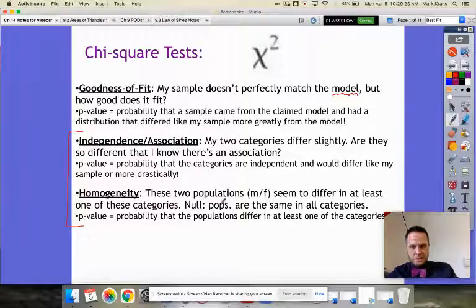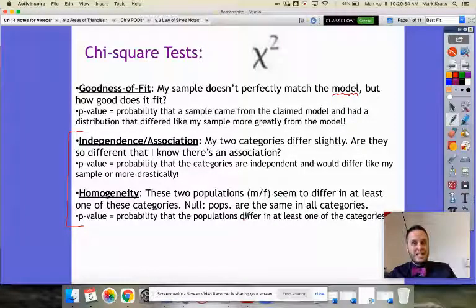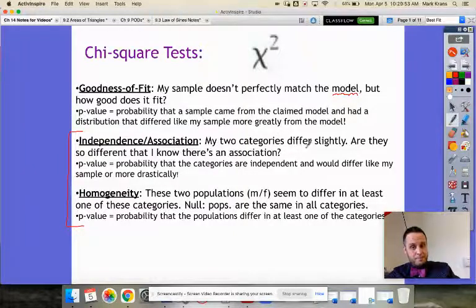The null: the different populations are the same in all categories. The p-value is the probability that the populations differ in at least one category. So we're dealing definitely with categorical data and they're all looking for sameness under the assumption of sameness here that the model, my sample is the same as the model or there's some differences. That the categories are the same or that there's same meaning independent or there's an association between things.